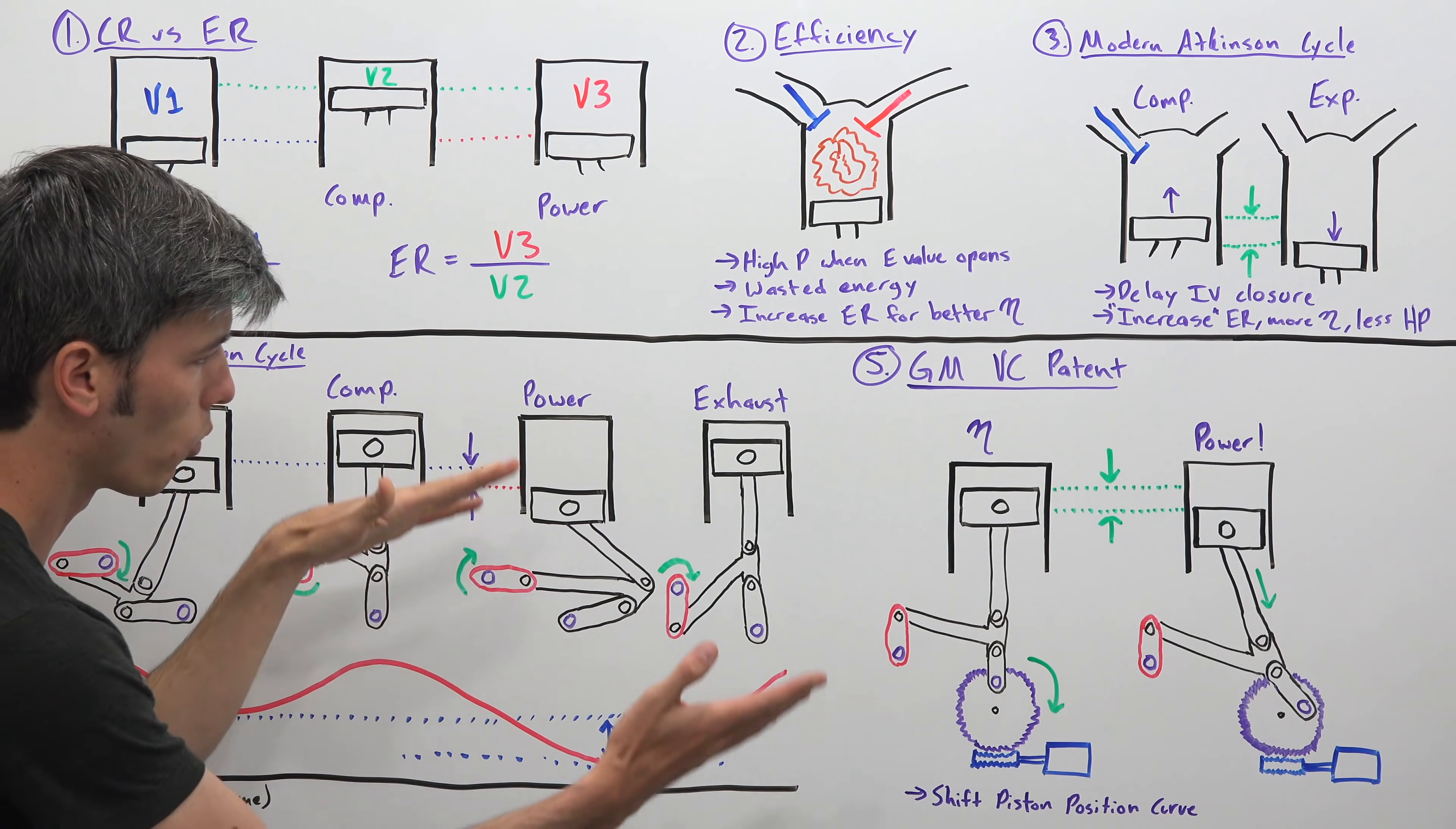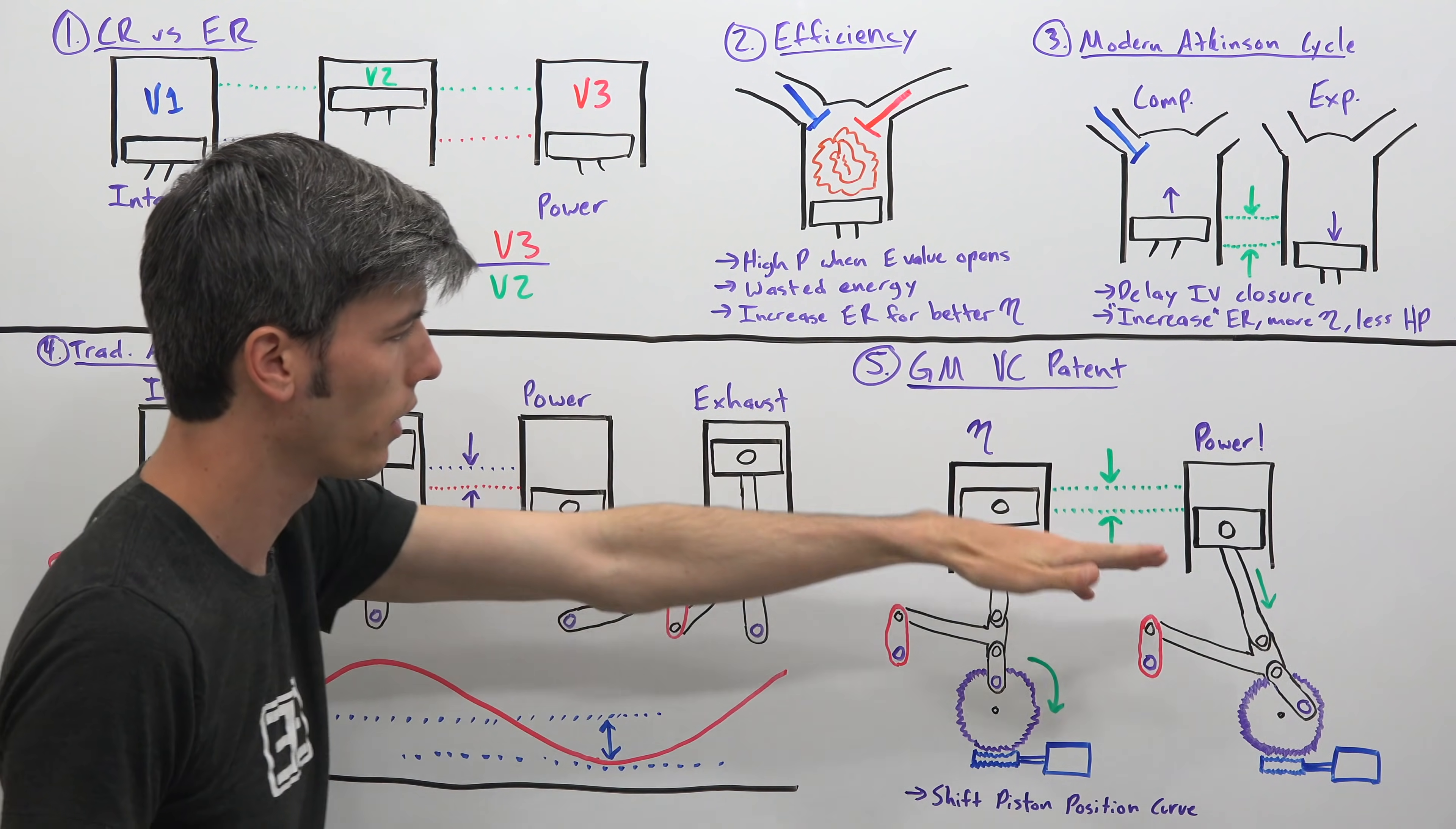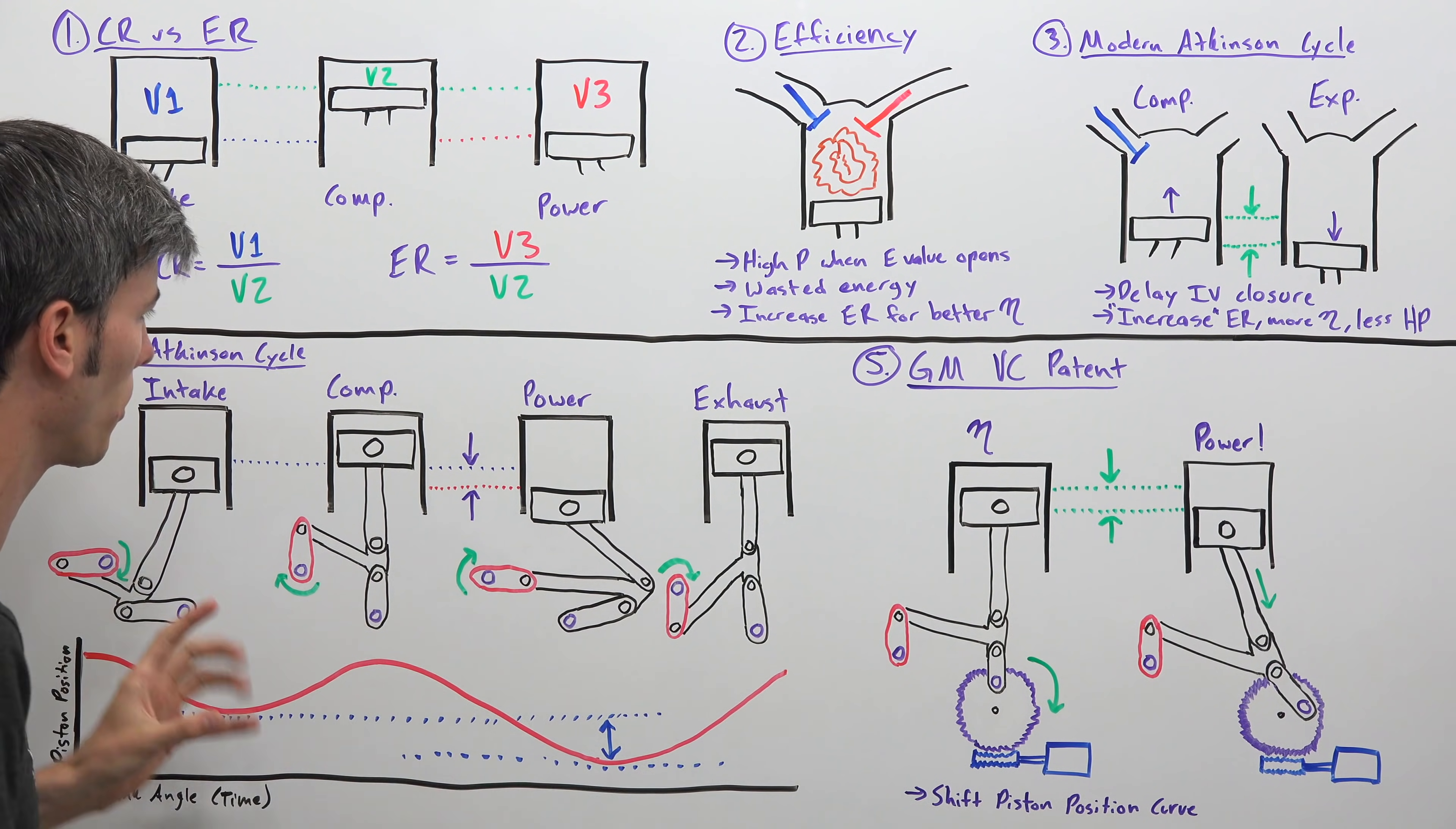So fairly neat. And what this is doing is just shifting this curve right here in your favor. So if you want more efficiency, you increase that compression ratio. If you want more power, you decrease it and you probably would add some boost in order to increase power. So a very clever system and ultimately based on something very simple.